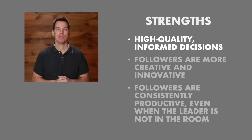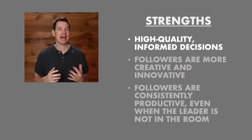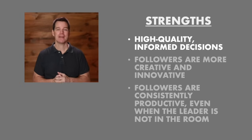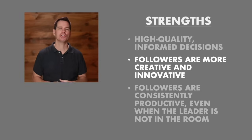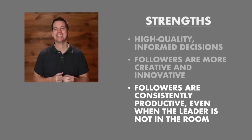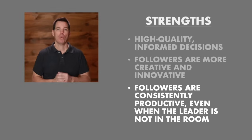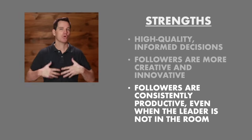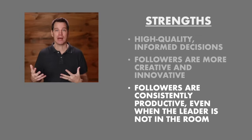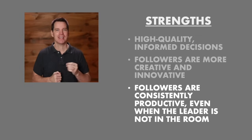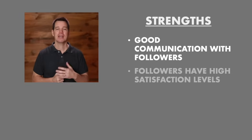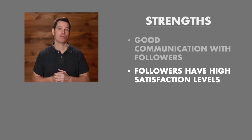Let's look at the strengths of democratic leadership. Democratic leaders tend to make high-quality, informed decisions because they gather lots of input. Followers can get more creative and innovative because they are given room to practice problem-solving. Democratic leaders get consistent, long-term productivity — a key difference from autocratic leaders. When an autocratic leader leaves the room, followers do not work as hard. In contrast, democratic leaders' followers work hard whether they're in the room or not. Followers are bought into the decisions, goals, and directions, and have high satisfaction levels.